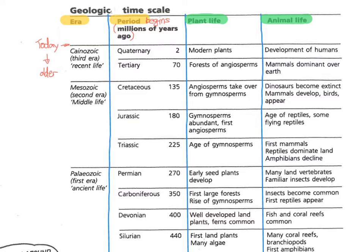Next question: when did the Devonian period commence? We don't want to look in the era column — we want to look under the period column. Go down until you find Devonian, and there it is. This number here — now you can understand why we wrote 'begins': the Devonian began 400 million years ago. The number next to it tells you straight out when it began.